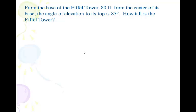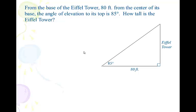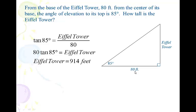From the base of the Eiffel Tower, 80 feet from the center of its base, the angle of elevation to its top is 85 degrees. How tall is the Eiffel Tower? So I draw a right triangle — we always draw a right triangle. Notice that 85 degrees is the angle of elevation to the top of the tower, and it makes sense the tower is going up. We're 80 feet along the base along the ground. You've got 85 degrees, the Eiffel Tower is opposite, 80 feet is adjacent, therefore we're going to use tangent.